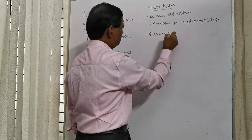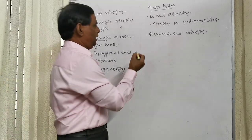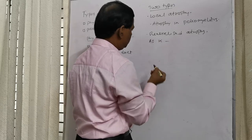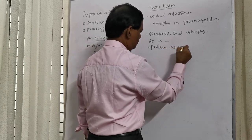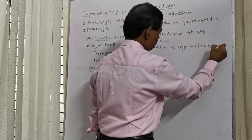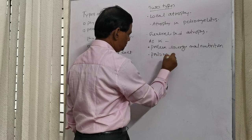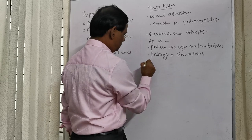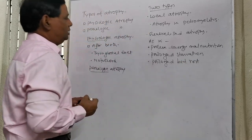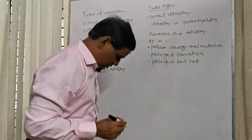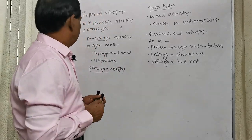Generalized atrophy: in this type of atrophy, the entire body — the whole body — undergoes atrophy. It may occur in protein energy malnutrition (PEM) and also in prolonged bed rest. In protein energy malnutrition, the baby undergoes marasmus and kwashiorkor. A marasmic baby is atrophied.